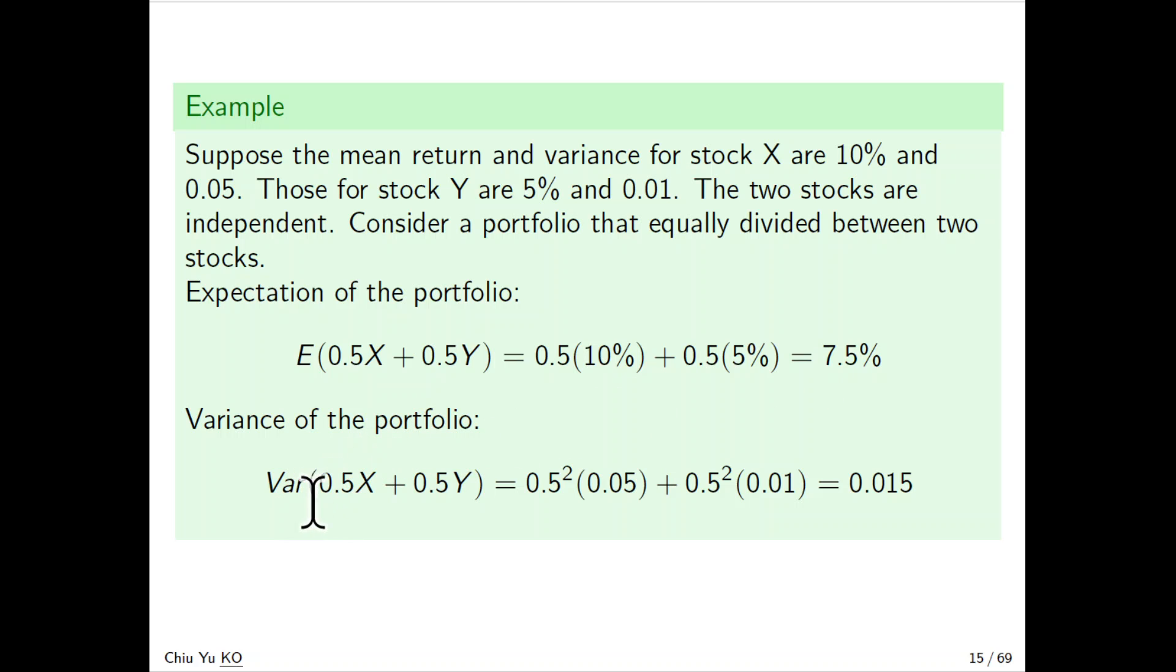For the variance, because they're independent, it will be Var(0.5X) + Var(0.5Y). Taking out 0.5 squared, it equals 0.5² times 0.05 plus 0.5² times 0.01, which equals 0.015. This is how we calculate expectation and variance in applications.